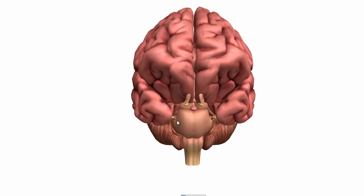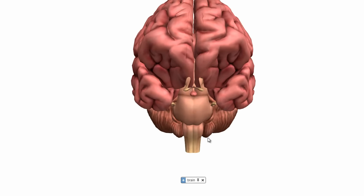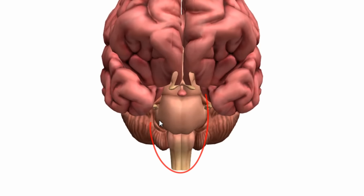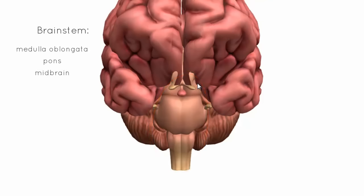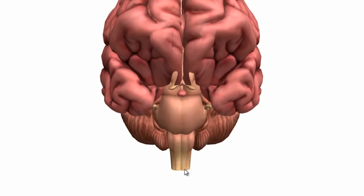I've just removed some of the nerves to make it a bit more clear. The brain stem is this bit here and it consists of three parts: the medulla oblongata, the pons, and the midbrain. The medulla oblongata is most distal or most inferior. It starts at the end of the pons and ends where the spinal cord begins, at the foramen magnum.